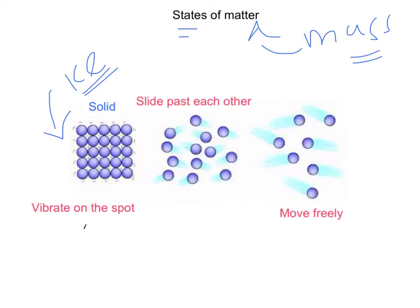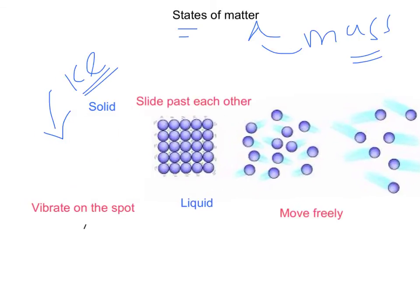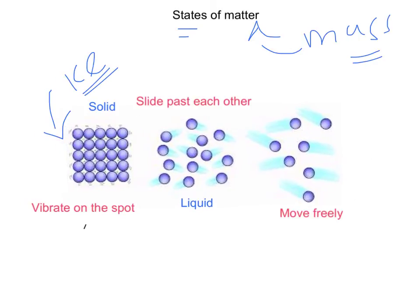Now if we add heat, for example, what we're going to do is turn that ice into liquid water. In ice we had only tiny vibrations, whereas in liquid water, what's going to happen is these particles move a bit more, sliding from place to place. That's what we call a liquid — sliding from place to place, but a bit more movement than in a solid.